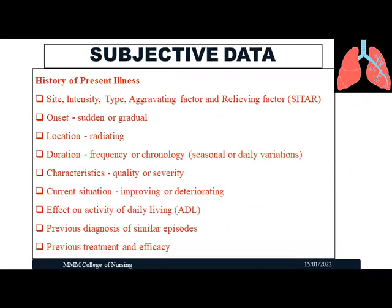The first component is the history of present illness. When a patient comes with complaints such as chest pain or cough, we need to identify the site, intensity or severity, type, aggravating factor, and relieving factor. This can be assessed using the mnemonic SITA or the PQRST format — where P is provocating or palliative, Q is quality, R is radiating, S is severity, and T is time-bound. Either format can be used to assess the present symptoms or illness.